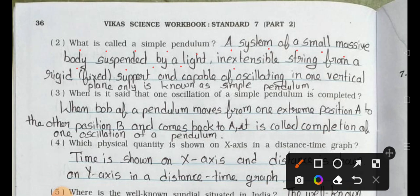Answer is: a system of a small massive body suspended by light and inextensible string from a rigid fixed support and capable of oscillating in one vertical plane only is known as a simple pendulum.